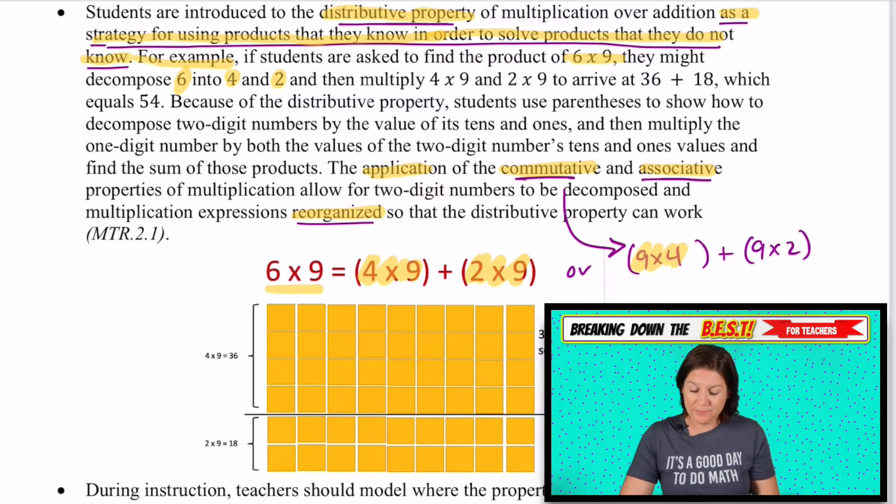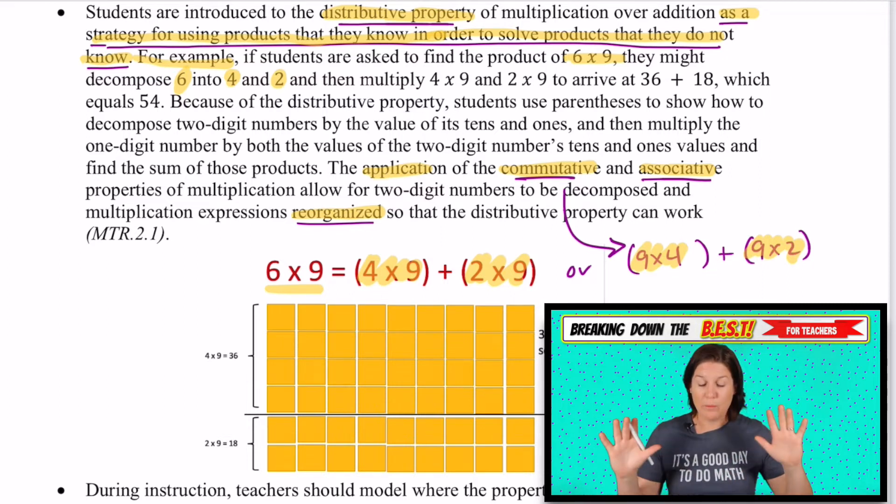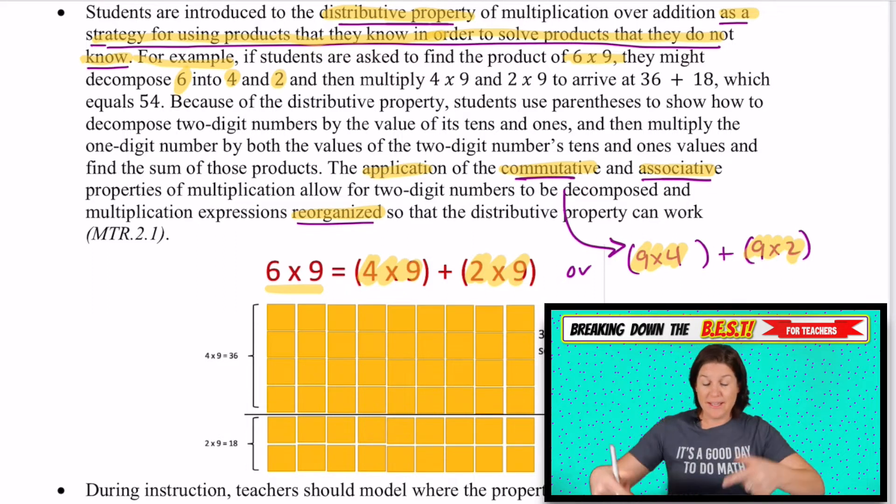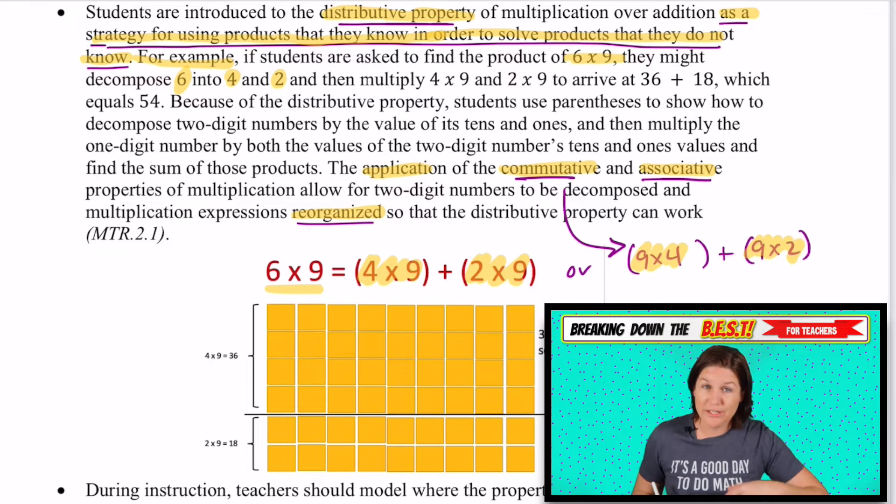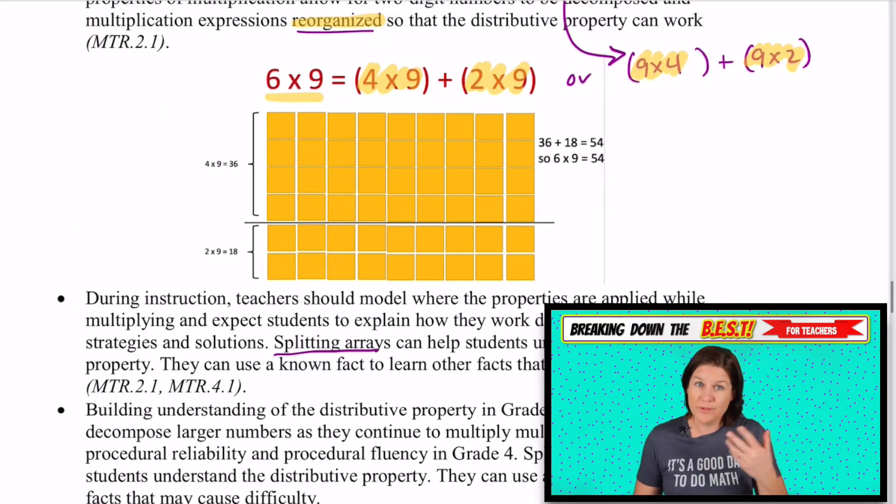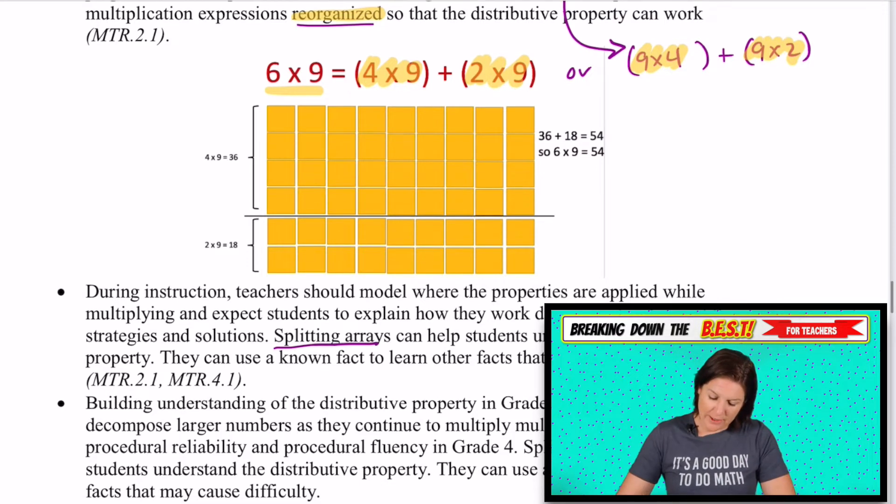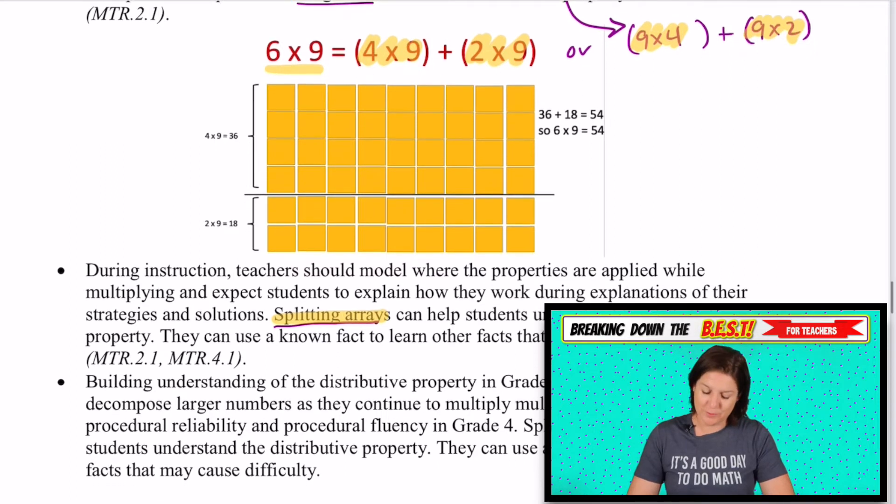That right there is using the commutative property in action. And we need to highlight that, that when we can, that we can change the order of the factors and still arrive at the same product. Hey, that's the commutative property. As much as we can bring that up with the commutative property and the associative property, the better equipped our students will be at recognizing those patterns and rules when it comes to those properties. A great way is to split arrays when you're talking about the distributive property of multiplication.